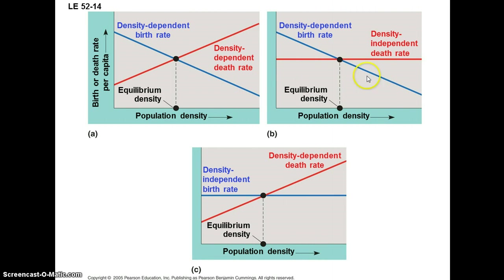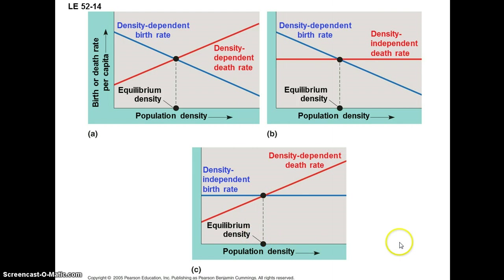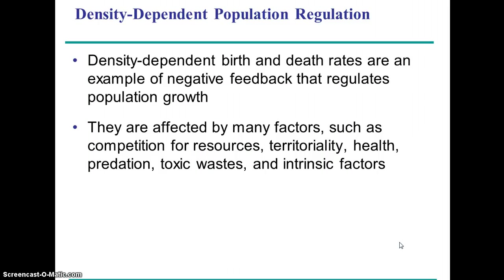Sometimes you might have a situation where death rate is relatively independent of population size — relatively consistent no matter what the population size — but the birth rate is density dependent, and so the equilibrium point is where they cross. Vice versa, birth rates can be pretty much the same no matter what density is, but the death rate depends on density, and again you'll have this equilibrium population density.